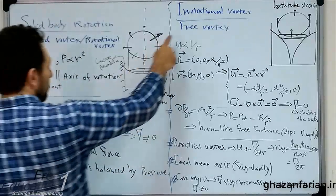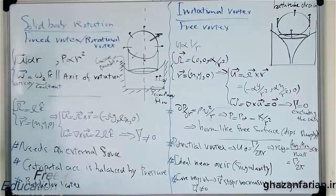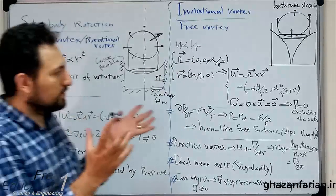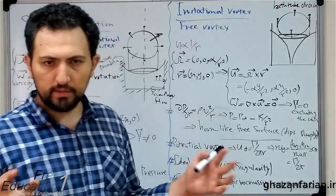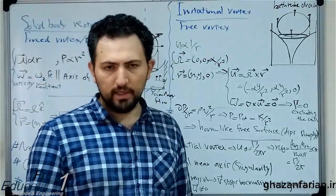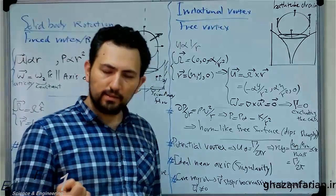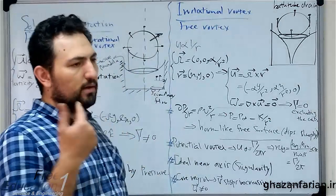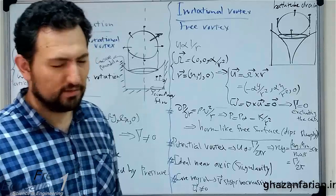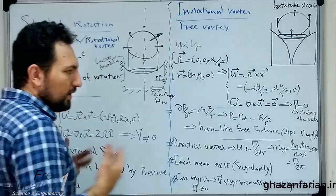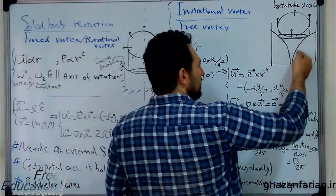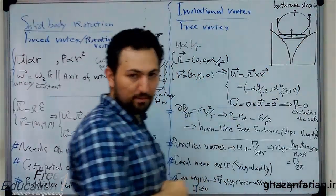The other name is free vortex, because in this kind of vortex there isn't any external force. Consider a container filled with stationary water, and there is a hole on the bottom of that container which is closed. When you open that hole, you will see that a free vortex appears. It's called the free vortex, and the free surface is something similar to a horn — Gabriel's horn.